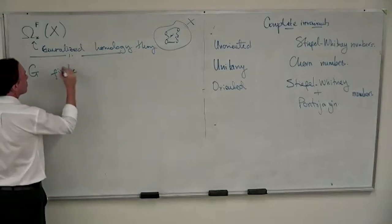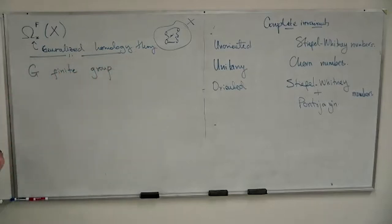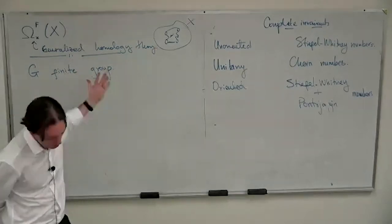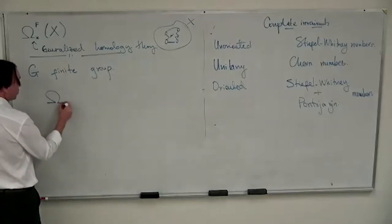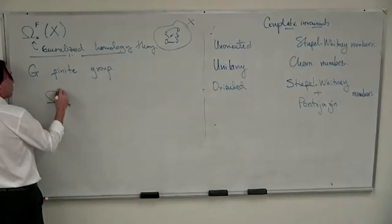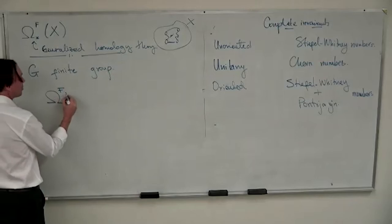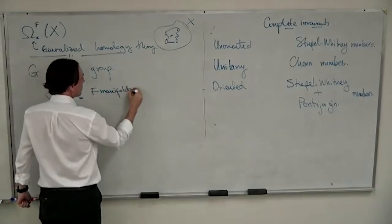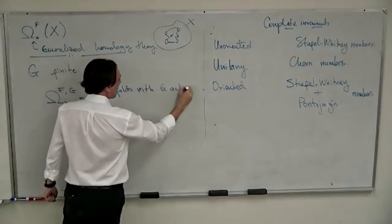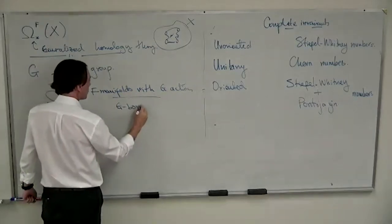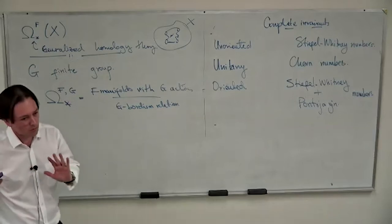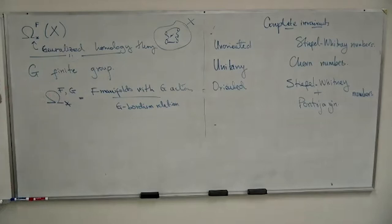Now G will be a fixed finite group throughout the talk. I can ask the same question: I have a manifold with a finite group action and I wonder whether this manifold with this group action bounds. I can define these equivariant bordism groups the same way — put the same decoration (unitary, oriented, or unoriented), put the group, and divide by the G-bordism relation.